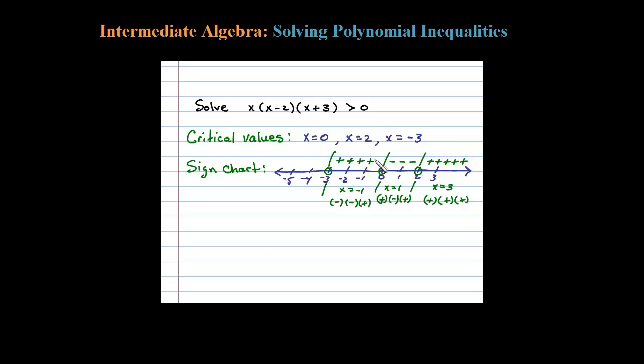Okay, now let's test a value in this interval, say negative 5. So substituting that in, you have a negative. Negative 5 minus 2 is negative. Negative 5 plus 3 is negative. Multiplying three negatives will yield a negative result. Okay, so this is the sign chart.